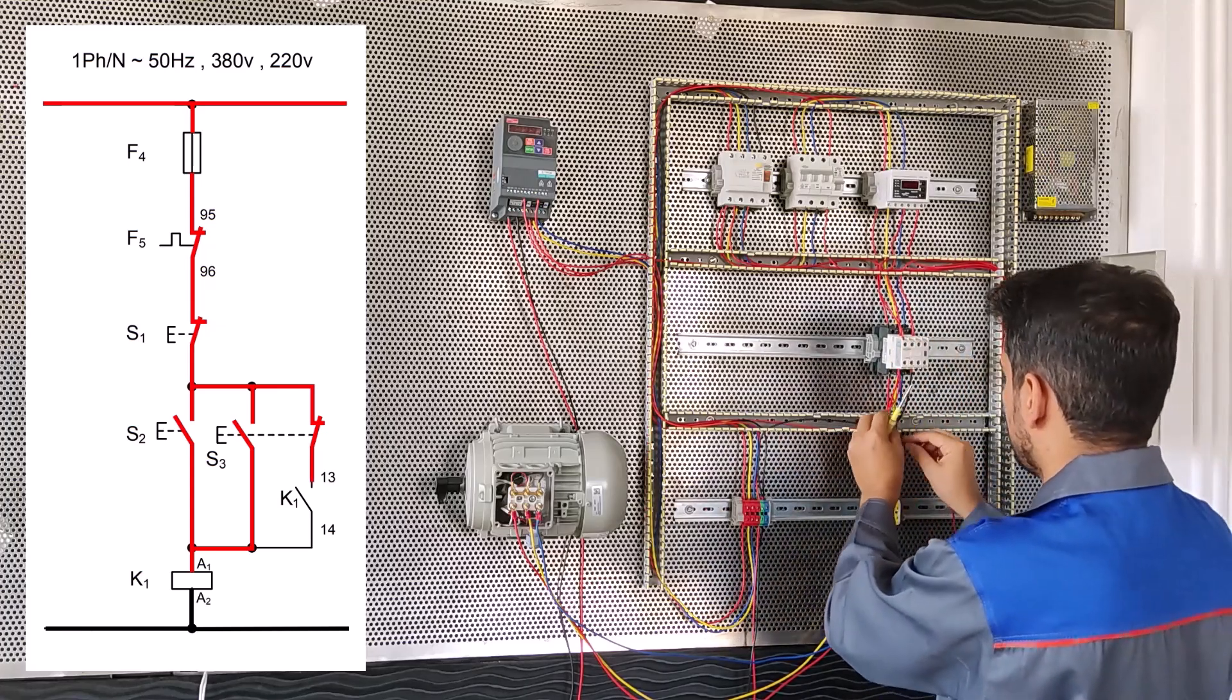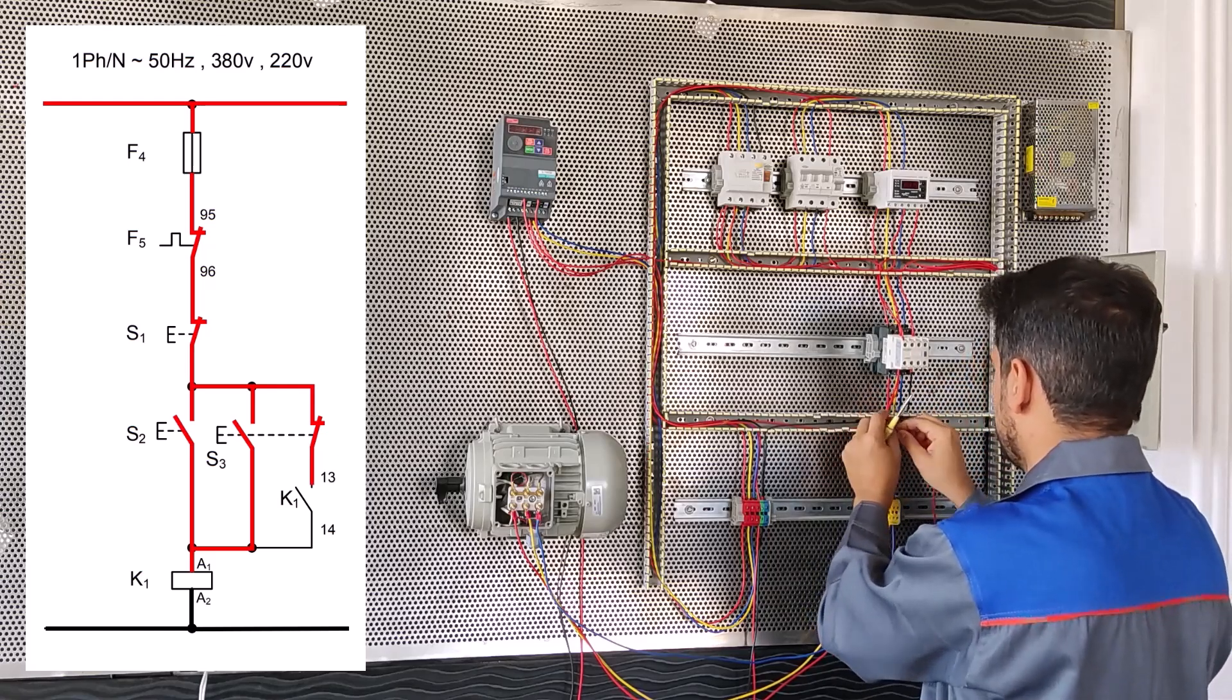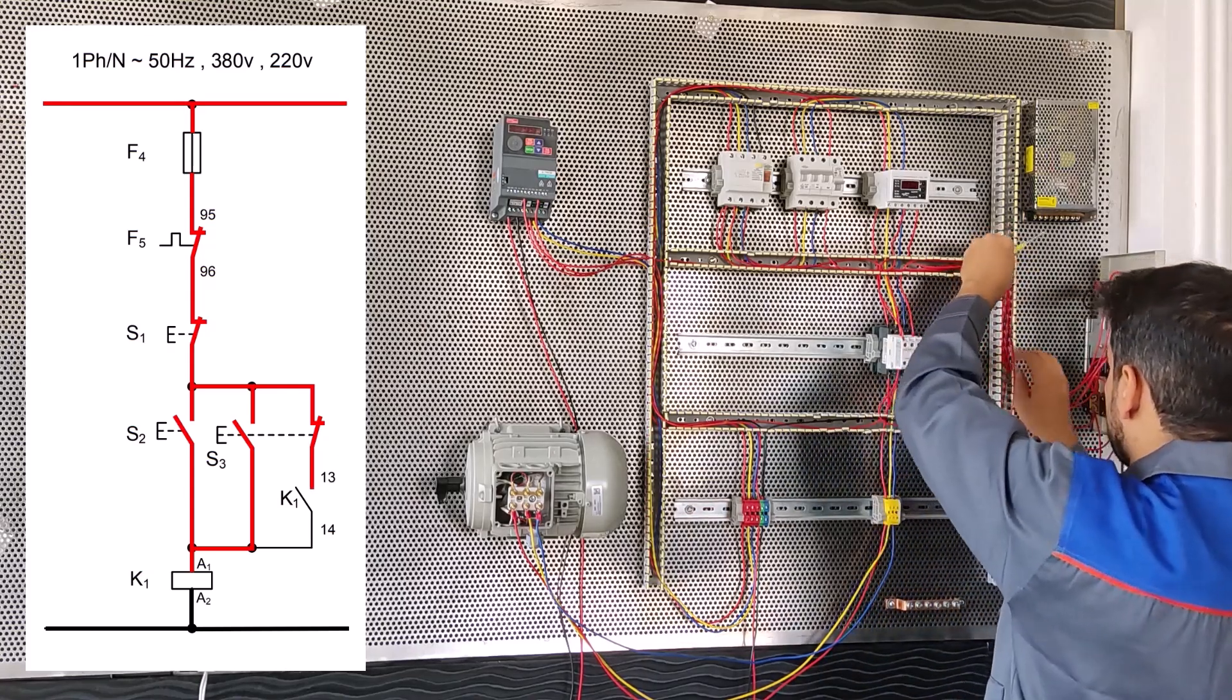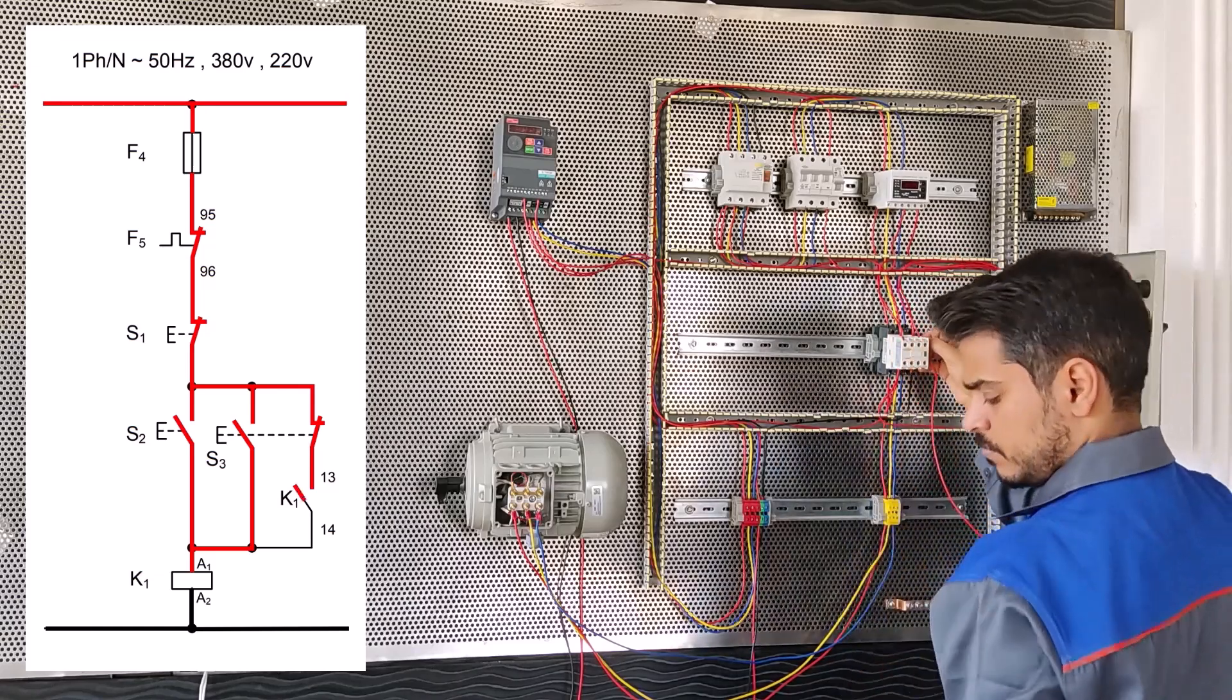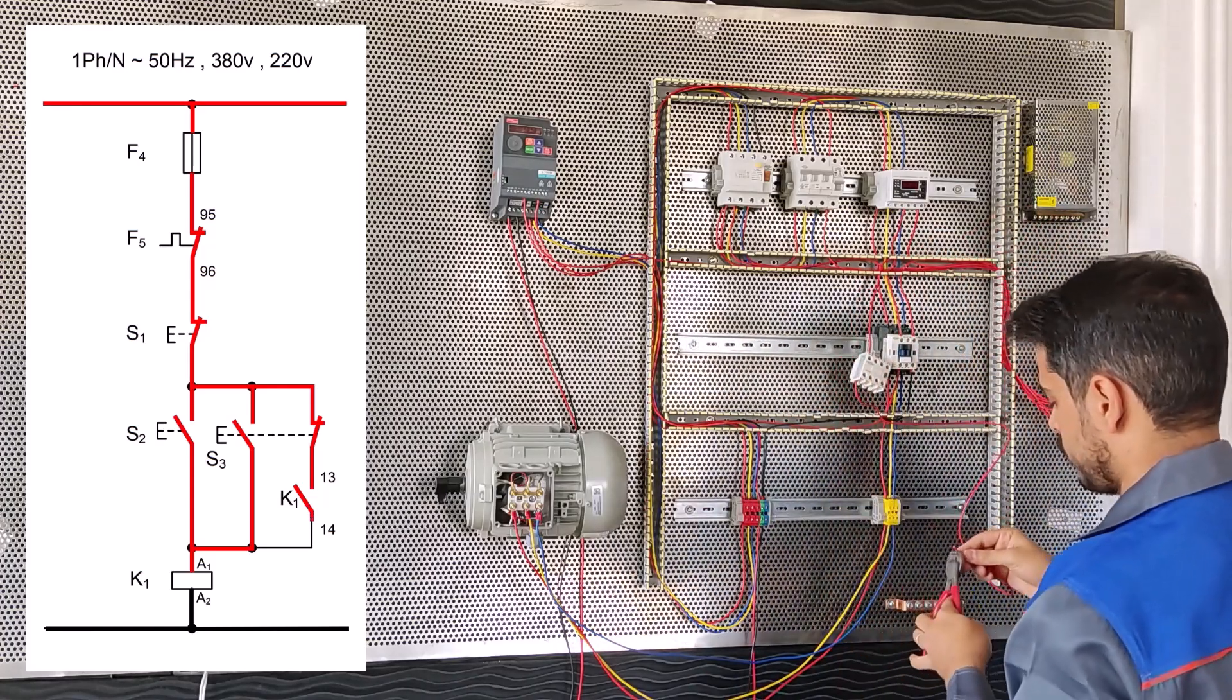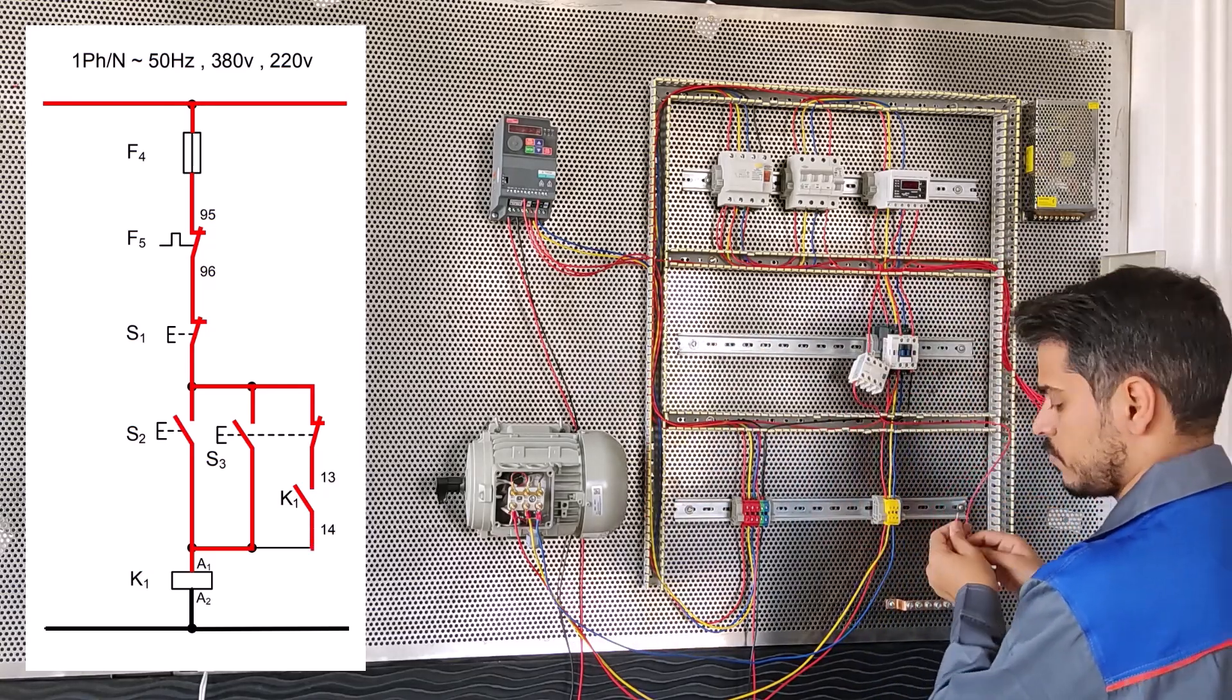Now we connect the K1 conductor to A1 from 14 K1 conductors. We can connect S2 or S3 to 13 starters instead of A1.